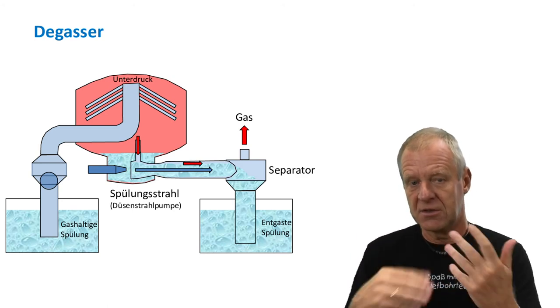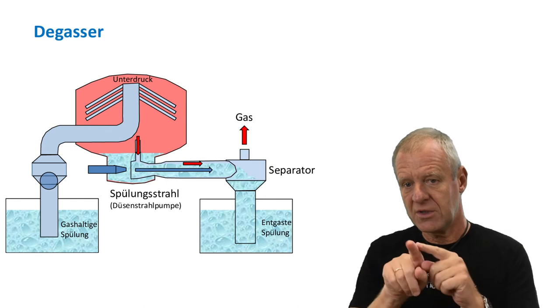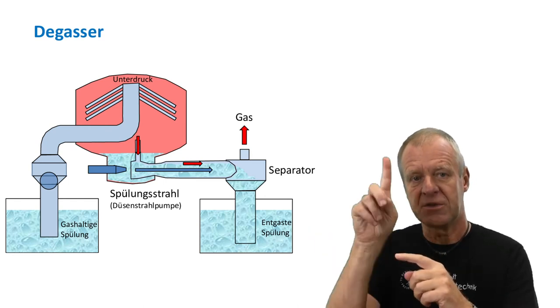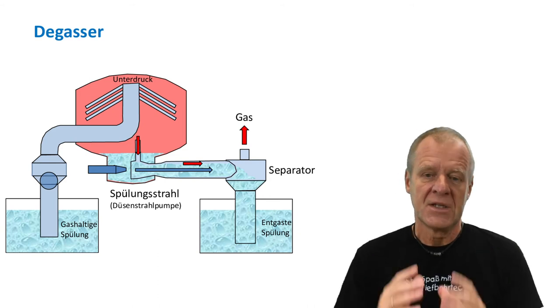Both the gas and the mud are separated again in the separator behind the jet nozzle pump, where the drilling mud falls downwards as the gas is sucked off at the top.